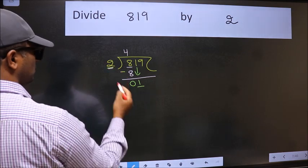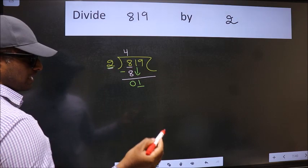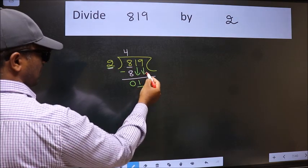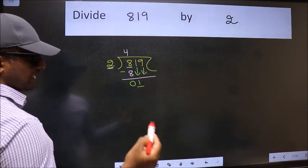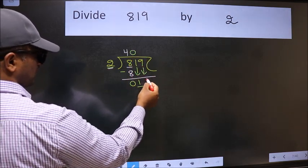1 is smaller than 2, so we should bring down the second number. And the rule to bring down the second number is we should put 0 here. Then only we can bring this number down.